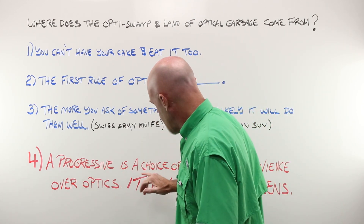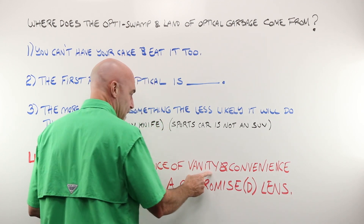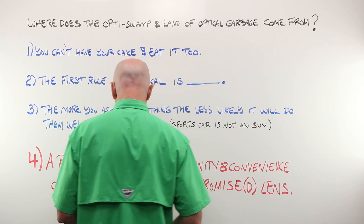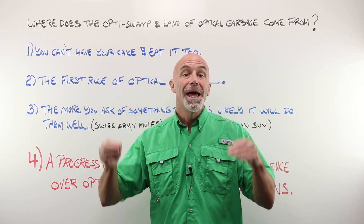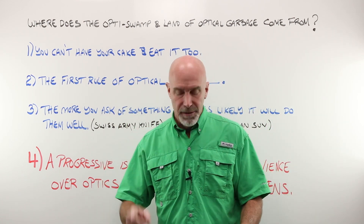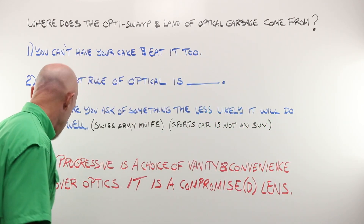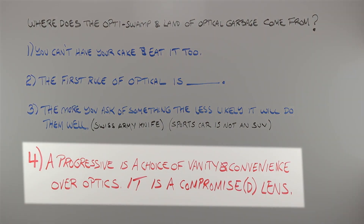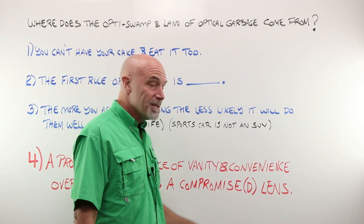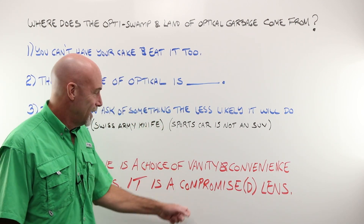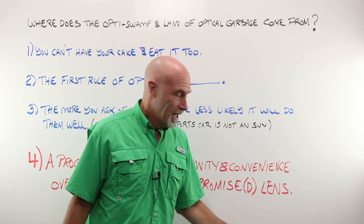A progressive is a choice of vanity and convenience over optics. Never, ever forget that. A progressive lens is a choice of vanity and convenience over optics. It is a compromise lens. It is a compromised lens.